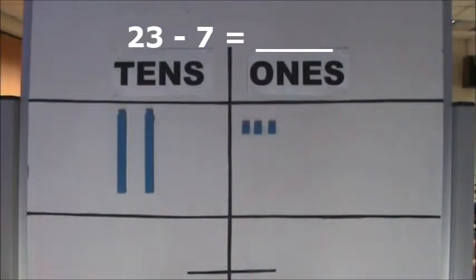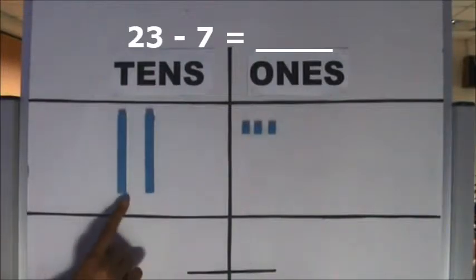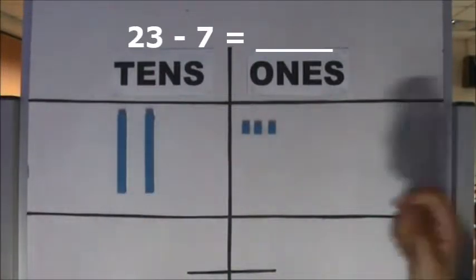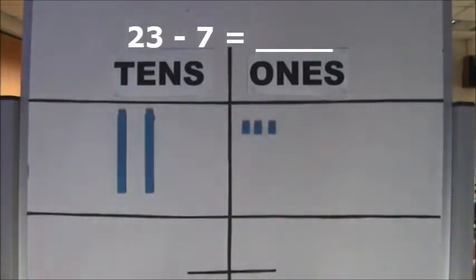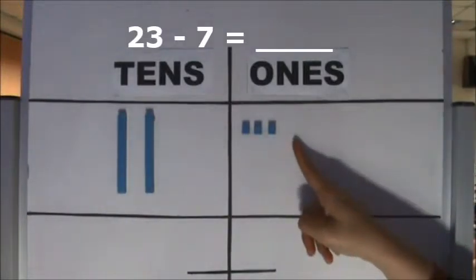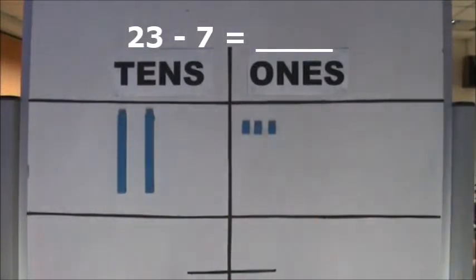There are 23 cubes. 23 is 2 tens and 3 ones. Let's take away 7 ones. Are there enough ones to take away 7 ones? There are only 3 ones. There are not enough ones to take away 7 ones.